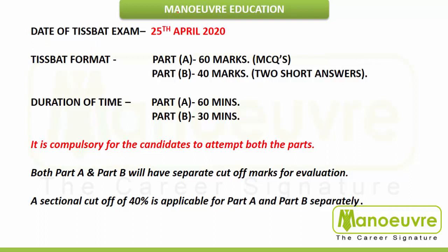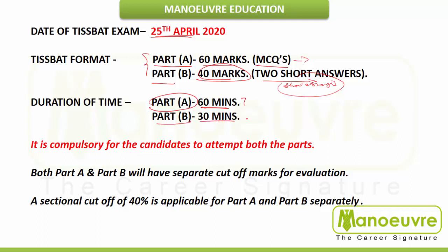Let's understand the examination pattern. The exam is scheduled on 25th April. The TIS BAT format is divided into two sections: Part A consists of 60 marks covering MCQs across all four sections, and Part B is 40 marks with two short answer essays. The duration for Part A is 60 minutes and for Part B it's 30 minutes, making it a total of 90 minutes.